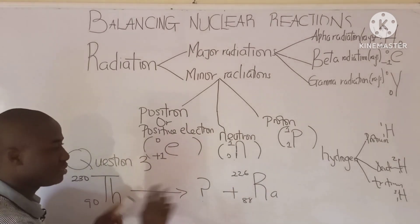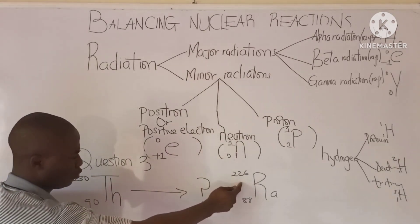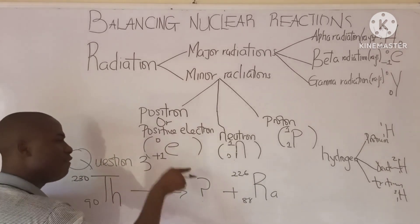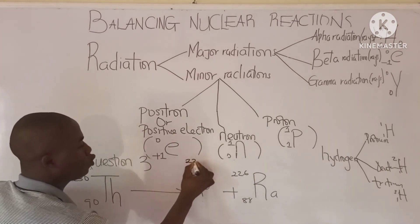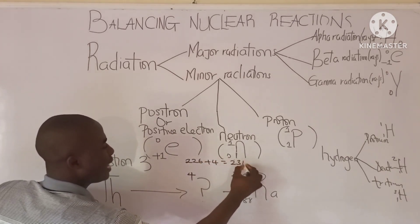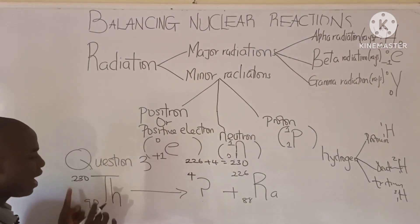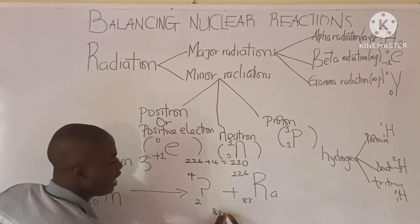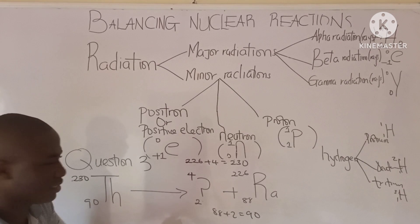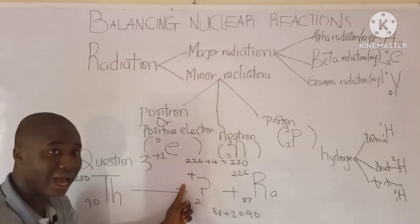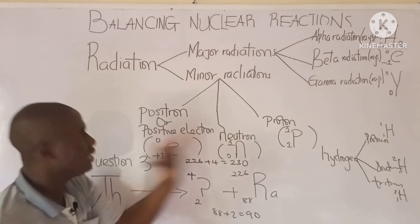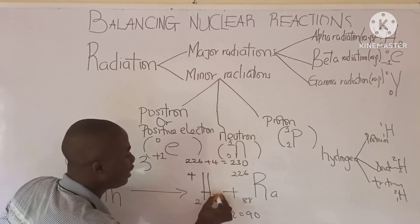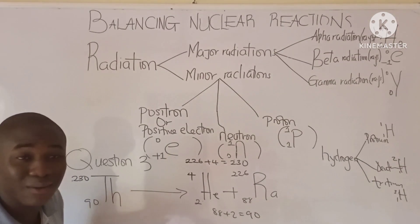To balance this, we check which superscript is higher — 230 is higher, and here is 226. So the value to write here is 4, because 226 plus 4 equals 230. That balances the superscript. Here is 90 and here is 88 for the subscript. What do we write? 2, because 88 plus 2 equals 90. Which radiation has this configuration? It is the alpha radiation — helium-4-2. So what should be here is the helium atom.